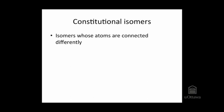One class of isomers would be constitutional isomers, which is the same as that example I just gave you on the last slide. These are constitutional isomers — same formula, different molecules — and to be constitutional, they have to have their atoms connected differently.